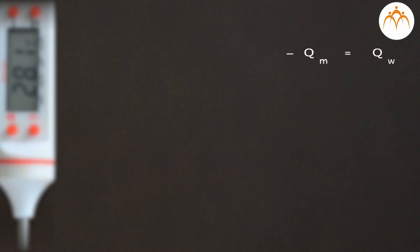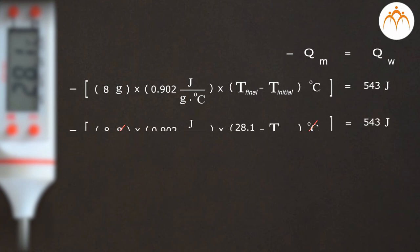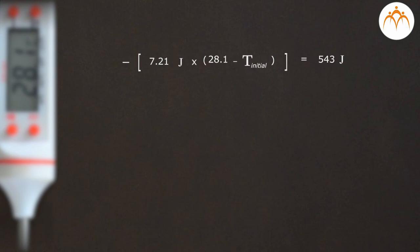So, minus of 8 grams into 0.902 joules per gram degree Celsius into T final minus T initial degrees Celsius equals 543 joules. So, T initial is equal to 75.31 plus 28.1. T initial is equal to 103 degrees Celsius.